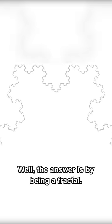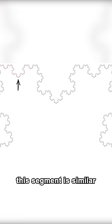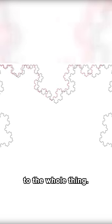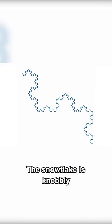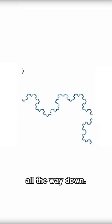The answer is by being a fractal. You can see that this segment is similar to the whole thing. And crucially, you can always zoom in and that will always be true. The Koch snowflake is knobbly all the way down.